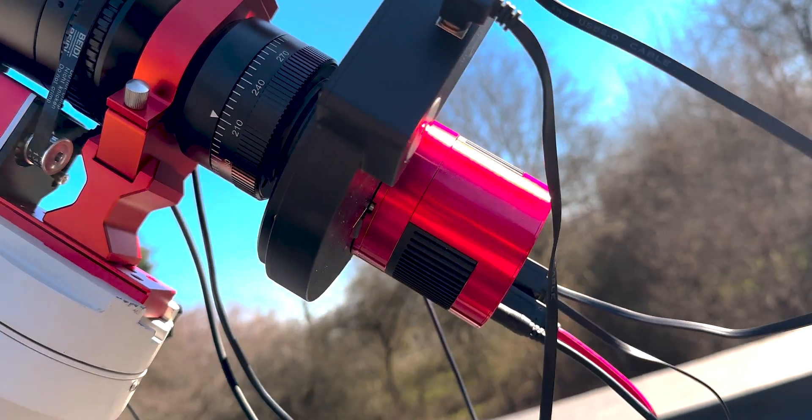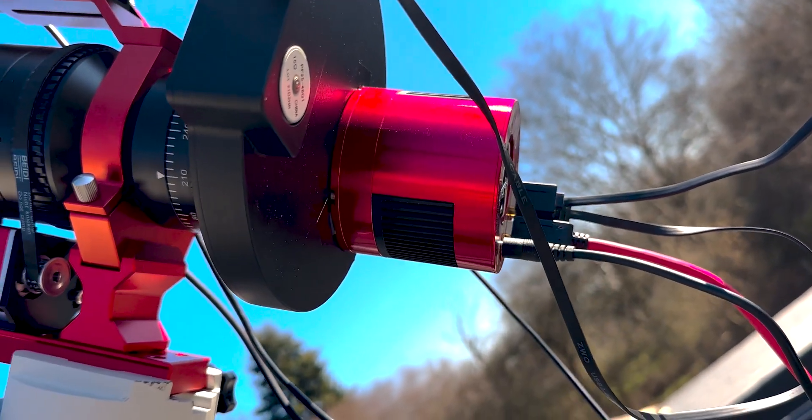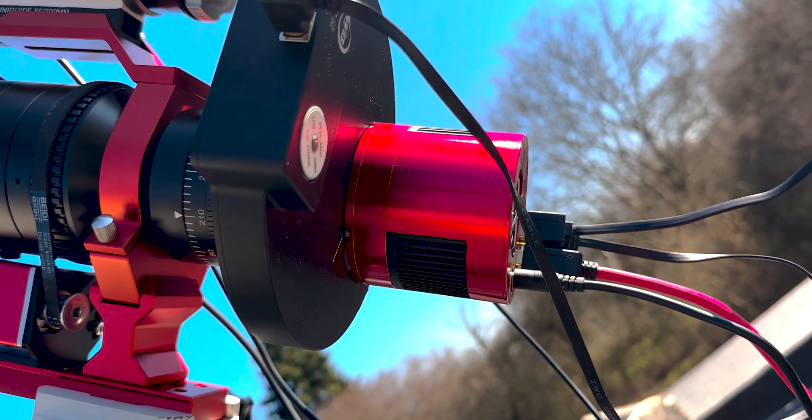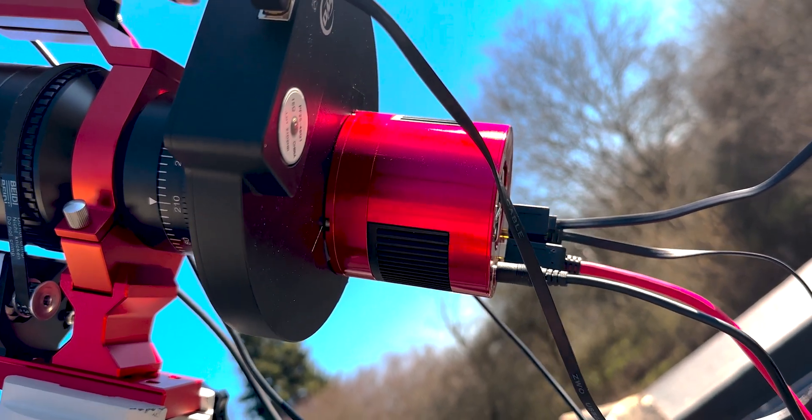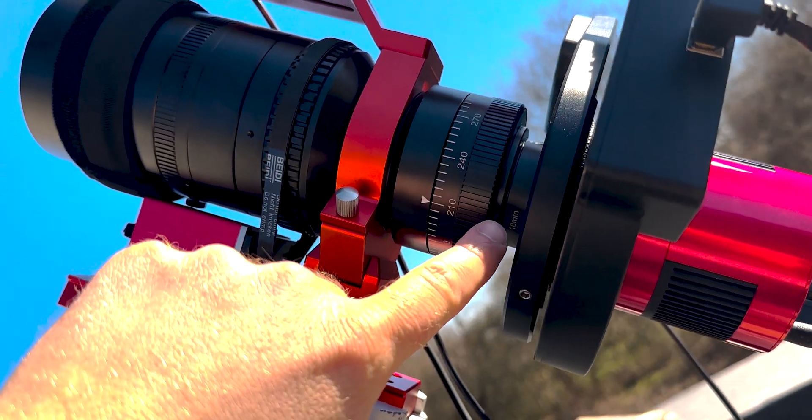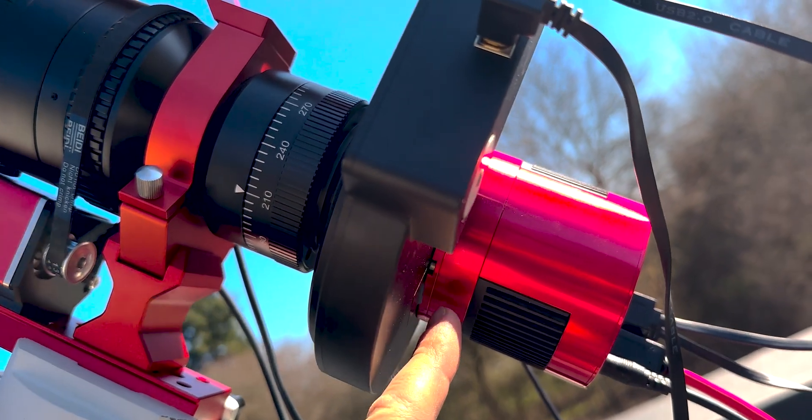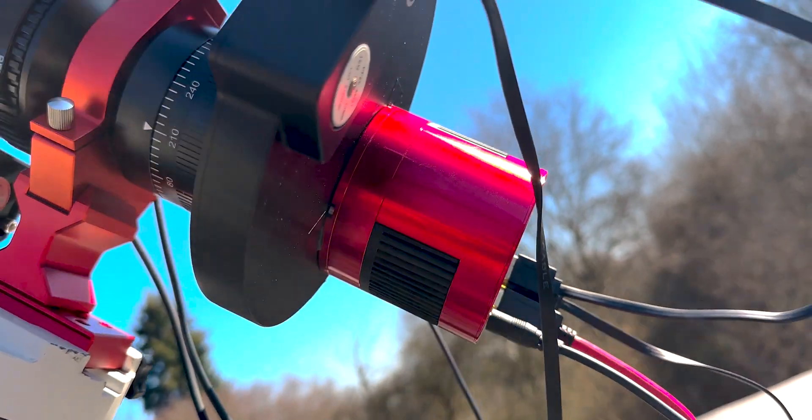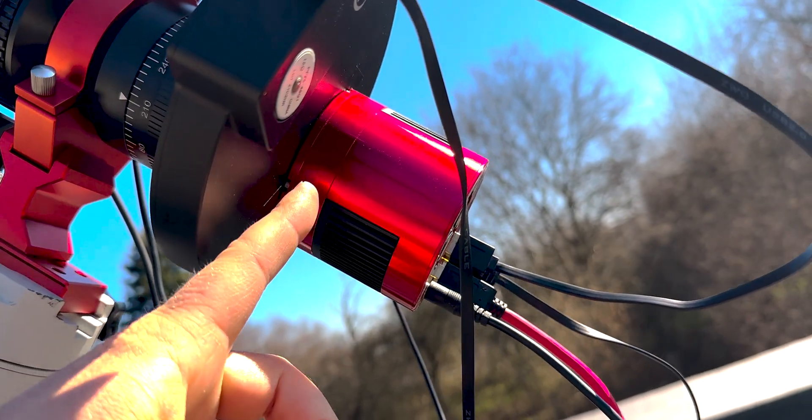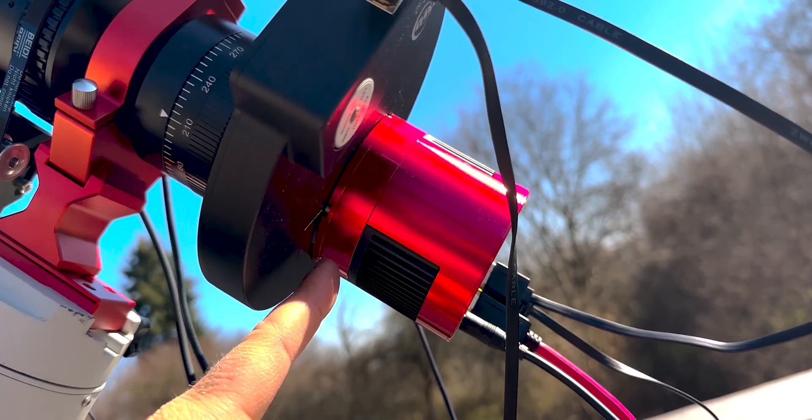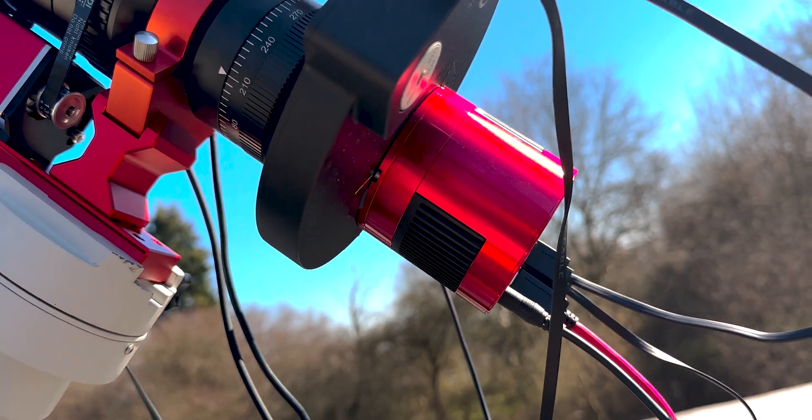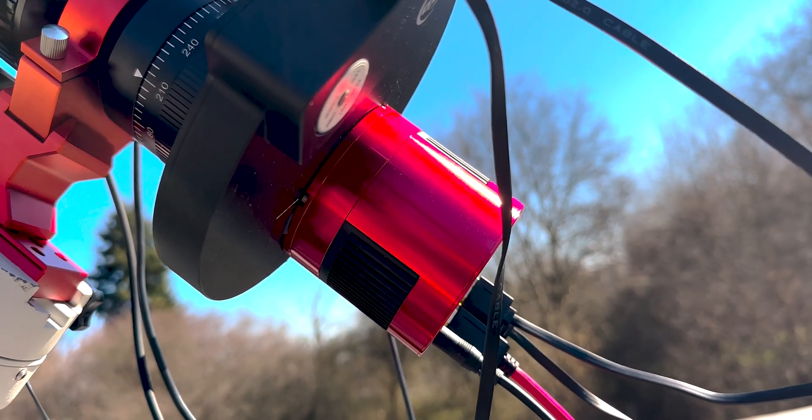And it turns out that actually inside the camera, there's also an internal back focus because the 55 millimeters is not from the camera body to the flange. It's from the camera sensor to the flange. And the sensor obviously in most cameras is not going to be right up against the thread when you screw it into something. It's going to be a little bit further inside the actual body of the camera.